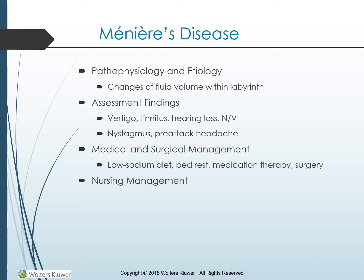Meniere's disease typically is unilateral, appears during middle age, and occurs with equal frequency in men and women. When fluid accumulates, it dilates the cochlear duct, diminishing hearing, and affects equilibrium as the vestibular system becomes damaged and tinnitus occurs. The client may be symptom-free except for permanent residual hearing loss between attacks. The cause of Meniere's disease is not known; physicians generally attribute it to viral infections of the inner ear, head injury, hereditary factors, or allergic reactions. Approximately half of clients diagnosed with Meniere's disease report a family history of the disease. More recent theories center on autoimmune factors.